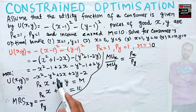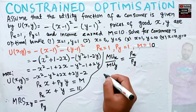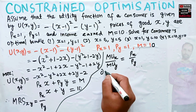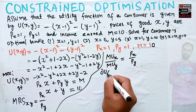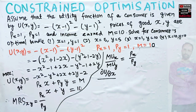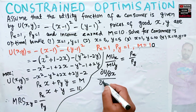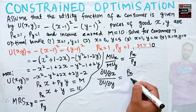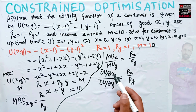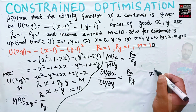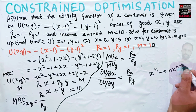The marginal utility of x is the partial derivative of the utility function with respect to x: du/dx. The marginal utility of y is du/dy. These should equal price of x over price of y. To find du/dx, we use the power rule: the derivative of x to the power n is n times x to the power n minus 1.